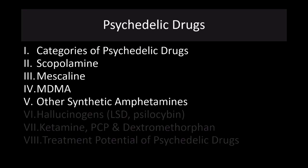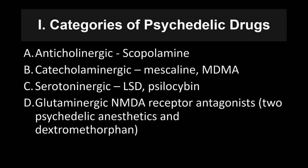We'll start here with some categories of psychedelic drugs. The first category are ones that are anticholinergic, such as scopolamine. The catecholaminergic include mescaline and MDMA. The serotonergic include LSD and psilocybin. And then the glutaminergic and NMDA receptor antagonists include two psychedelic anesthetics, PCP and ketamine, and also the drug dextromethorphan.